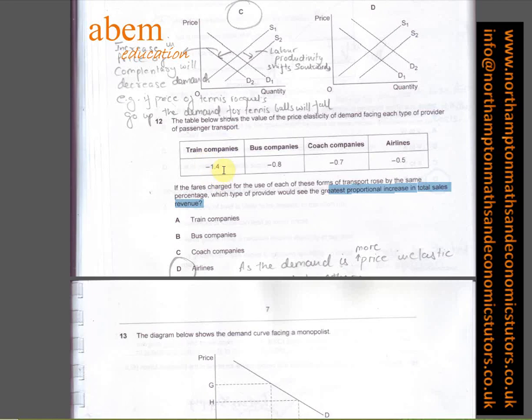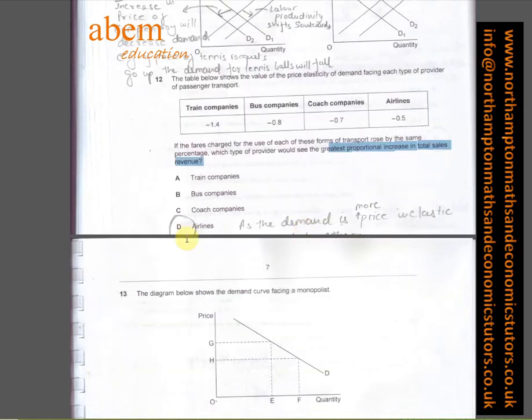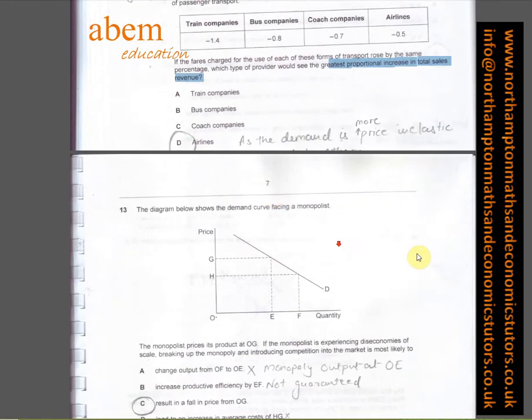If we look at 1.4, because it's above 1, we know it is highly price elastic. Minus 0.8, minus 0.7, minus 0.5, and the more it goes down to 0, then it becomes perfectly inelastic. So minus 0.5 would be inelastic. Airlines is the answer.